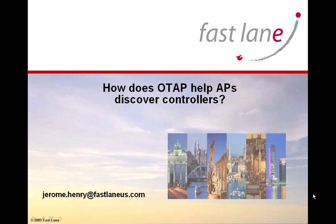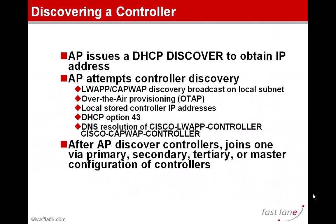You've probably heard about OTAP — that's Over-the-Air Provisioning of Access Point — a feature by which an access point can discover its controller using its radio. As you probably know, the access point needs to discover controllers before it can join them. Among all the features that the access point is going to try to get information about controllers, one of them is Over-the-Air Provisioning.